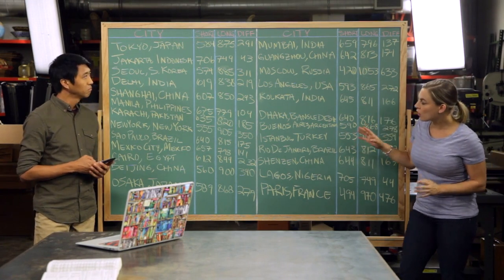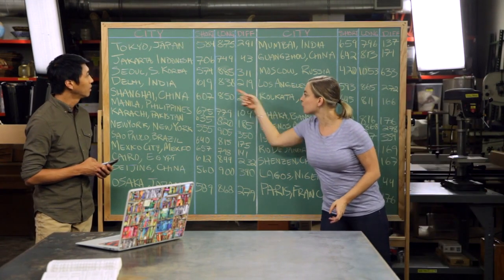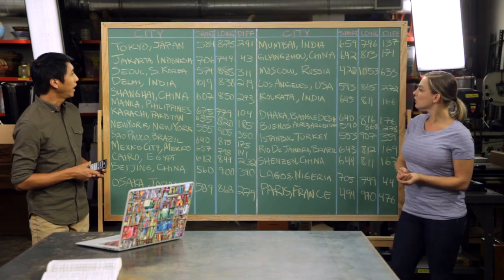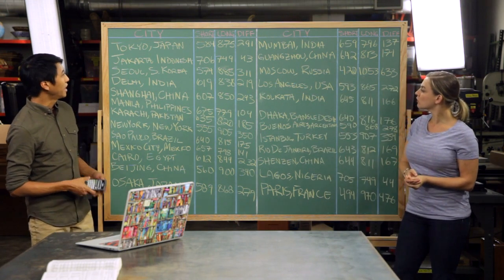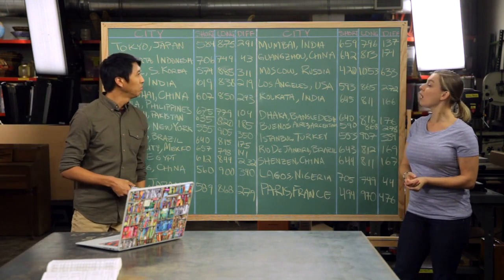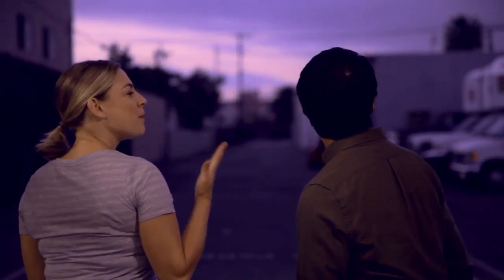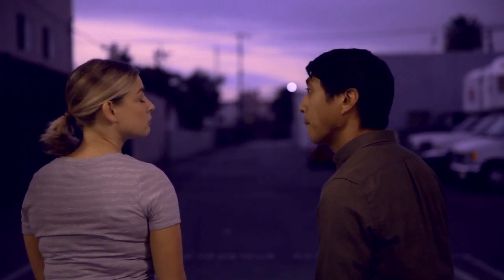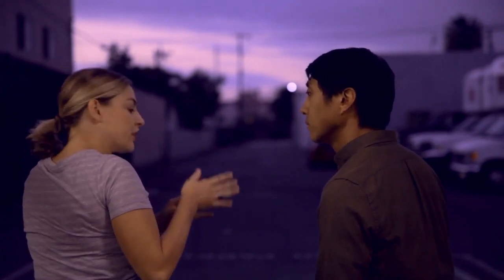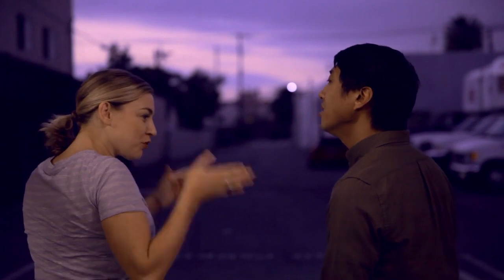Delhi, India is pretty close to the average, and that's not much different from here. It does tell us that most large cities are neither too far from the equator nor too close — they're in between. It's kind of like Goldilocks: the day's too short, the day's too long, the day's just right.